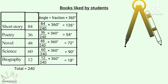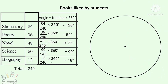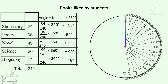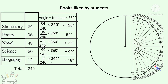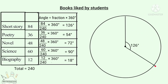We draw a circle. Now we have a radius in this circle. We have a Short Story segment — the angle is 126 degrees. We use the protractor with the center at the circle center, protractor at 0, and measure a 126-degree angle: 0, 20, 40, 80, 100, 120, 126. So we have a point here. This segment is the Short Story segment.